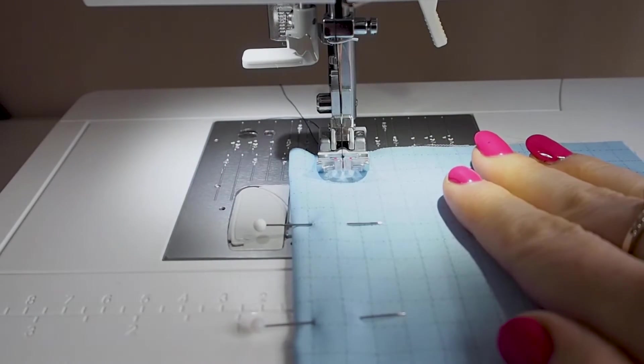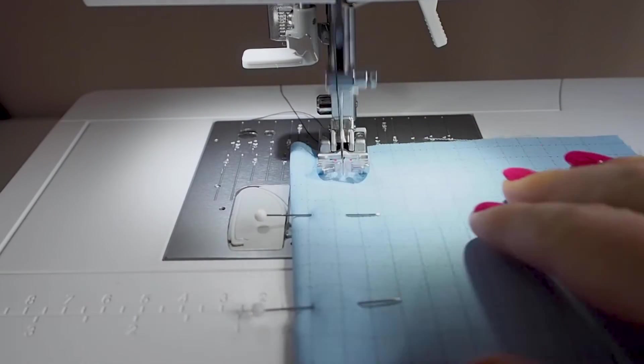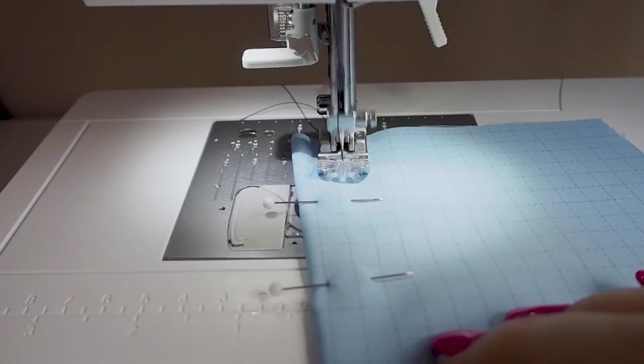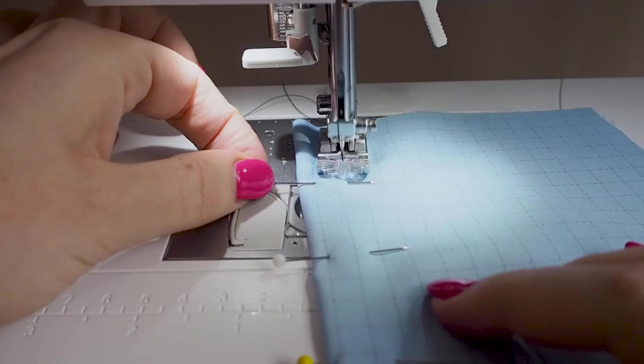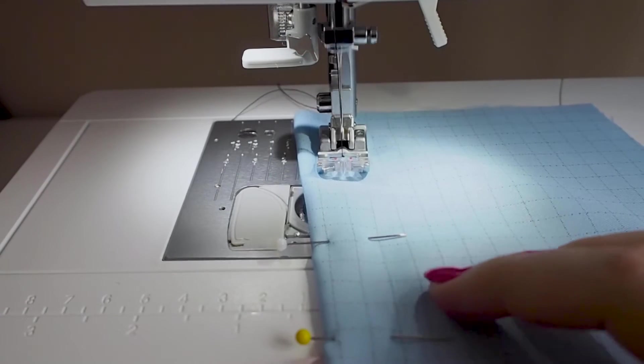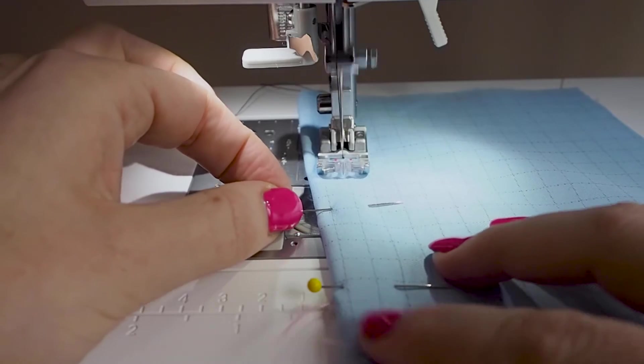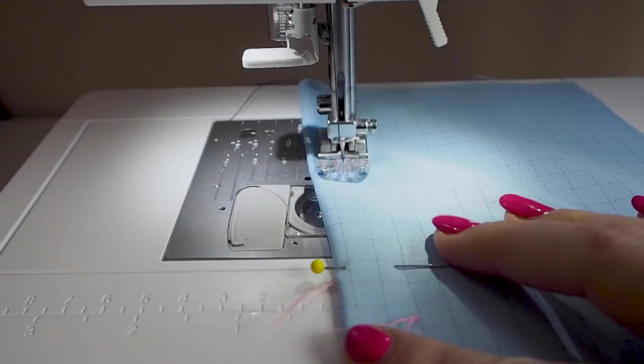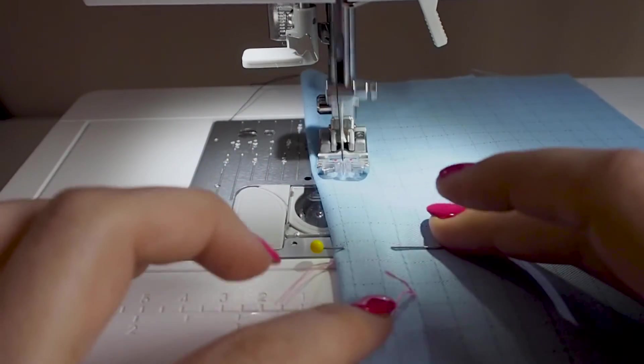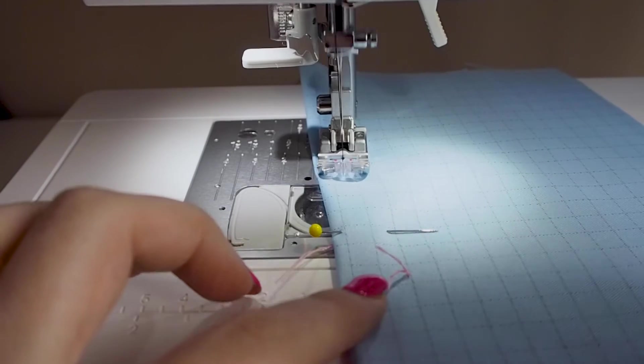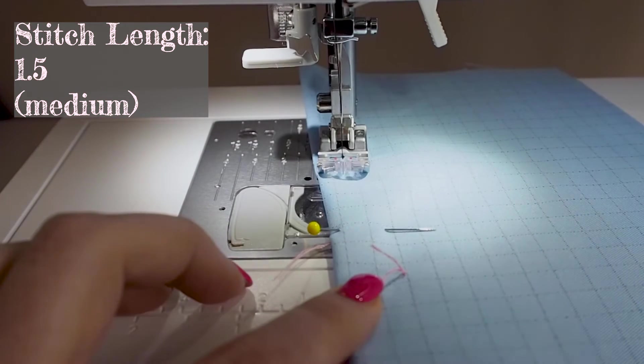When you get to about one and a half inches from your dart point, lower your stitch length and continue to sew. At about half an inch, lower it again and about a quarter to an inch, you want to be at your lowest stitch length. In my case, this is 0.5.